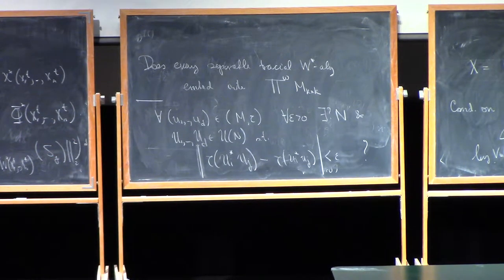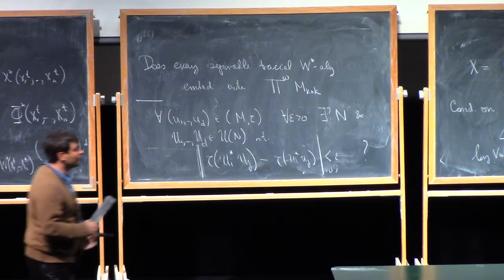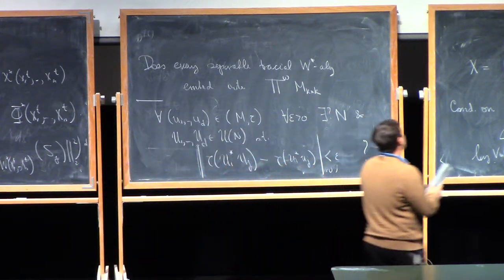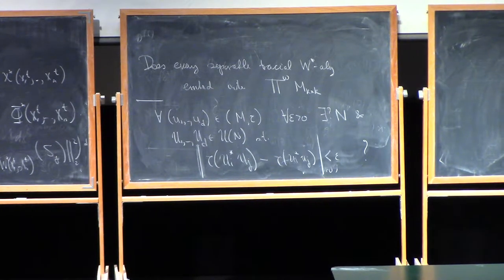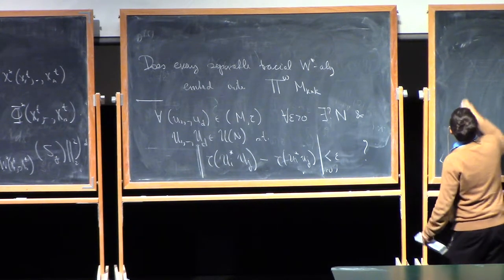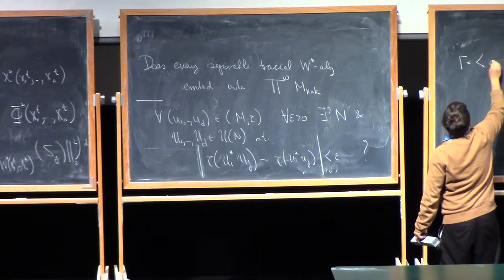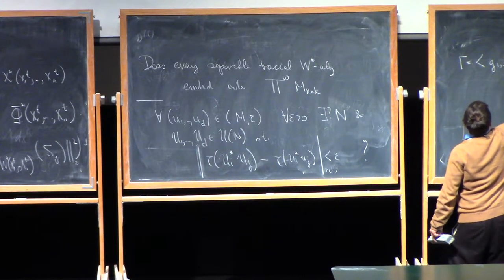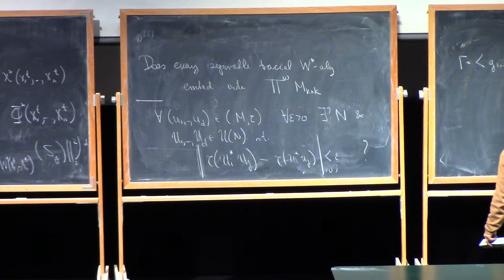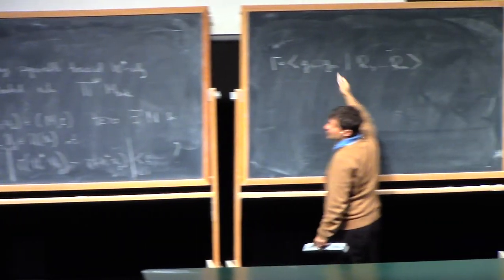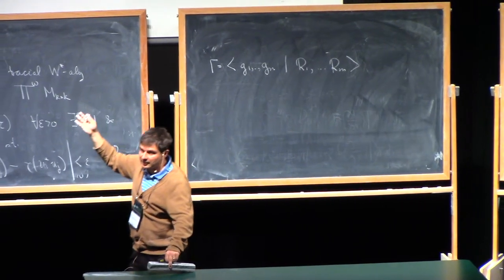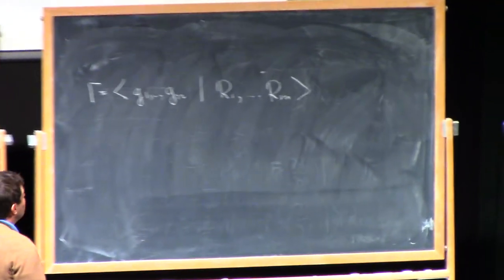It's also related, you may have heard, let me just say the word about what are sophic groups. You can ask this for a group. I mean, this is really the simplest way of asking the question. Suppose I give you a group Gamma which is really given as generators and relations. It's generated by G1, Gn subject to some relations, R1, Rm. Even for the purposes of this discussion, even finitely presented, so finite number of relations.